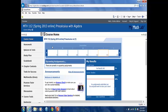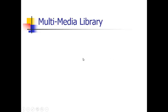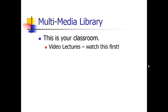You have your homework button, which will take you to your homework assignments, quizzes and tests, and the gradebook, which will take you to the gradebook to see your grades. There is also the multimedia library, which is where your classroom is located. You will begin working in the course by clicking the multimedia library button. For each section, you will have video lectures, an online textbook, PowerPoint, and animations available to you.